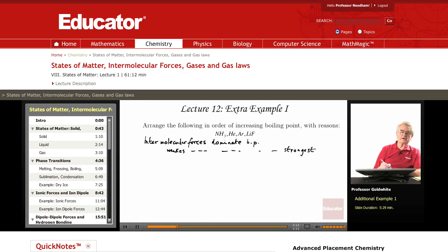The weakest are the London, or dispersion forces, which remember, increase with the number of electrons present in a species.